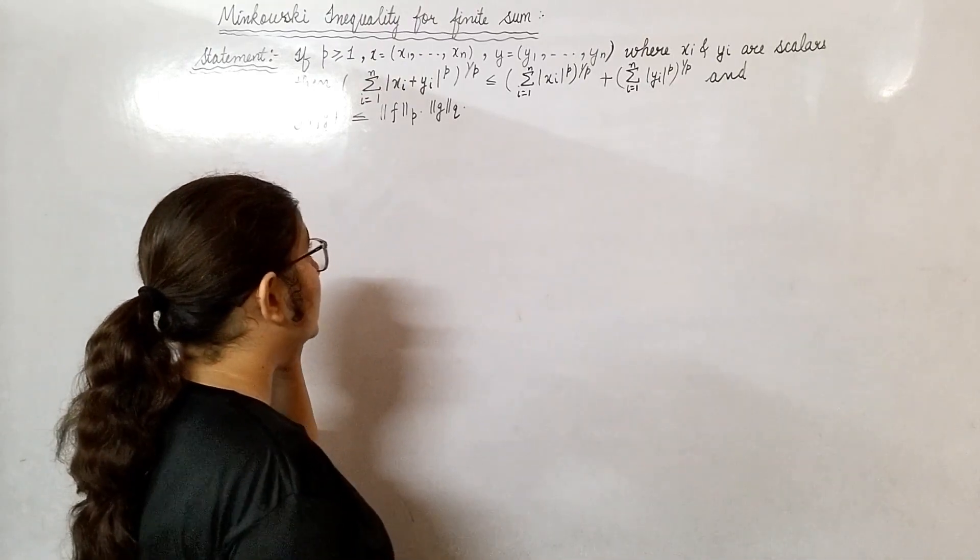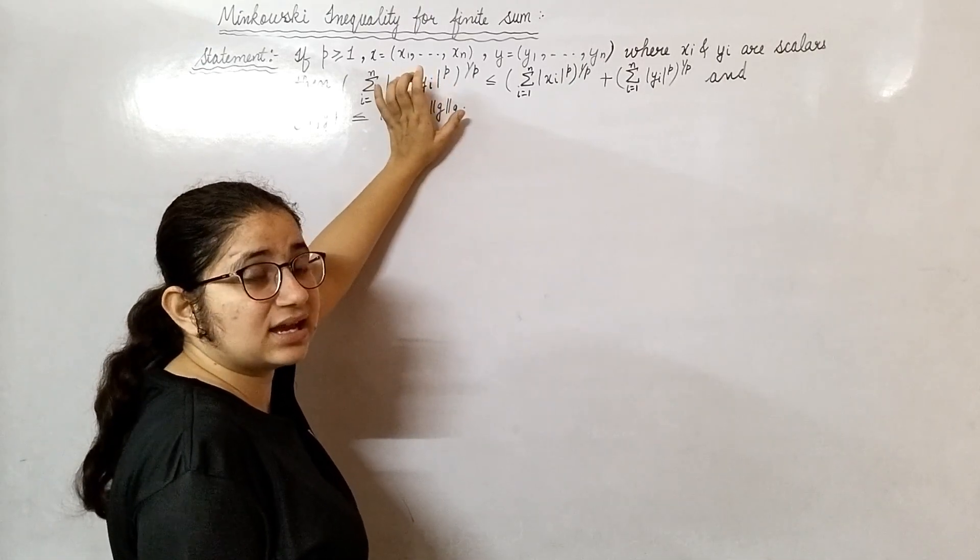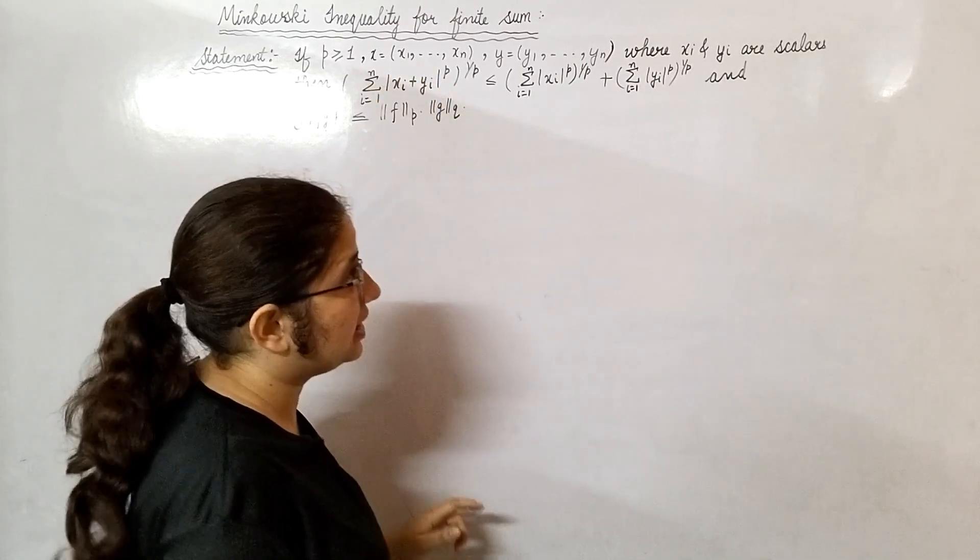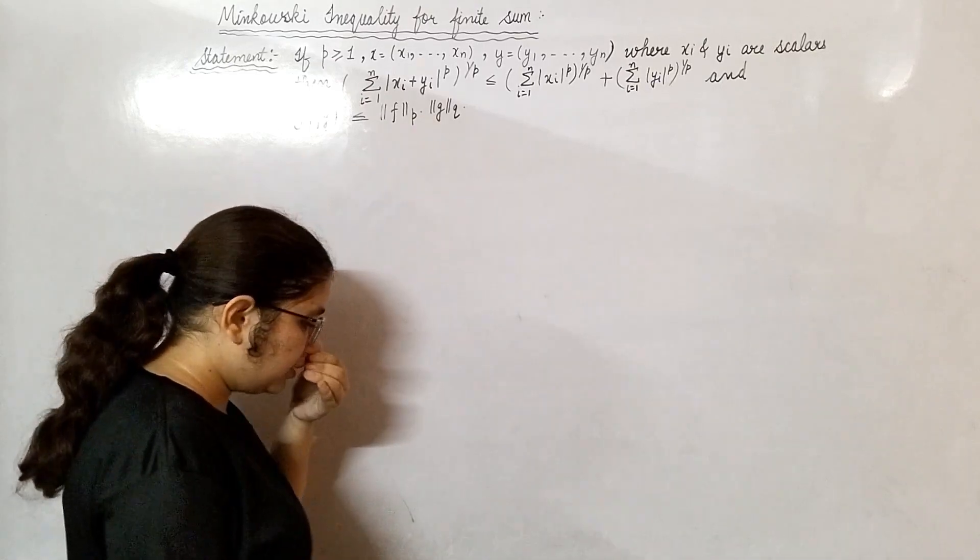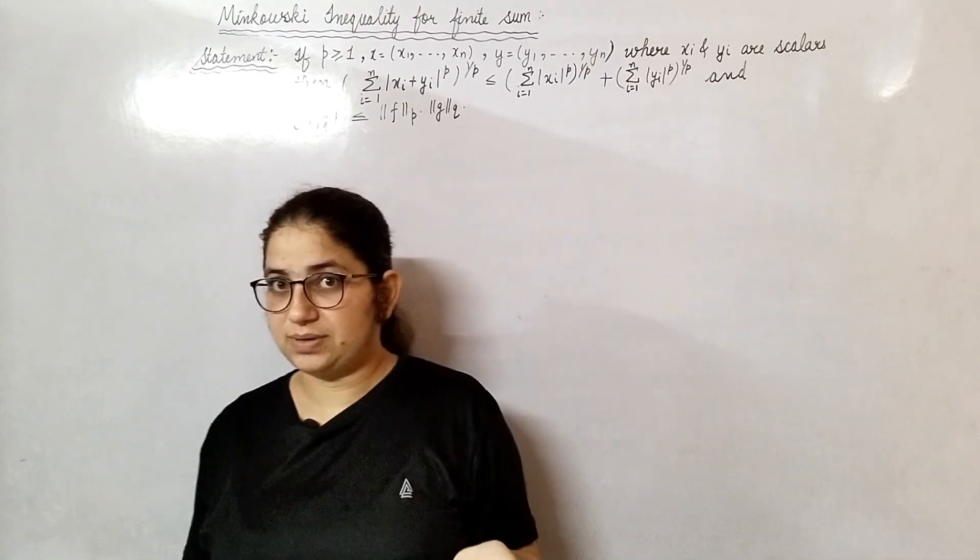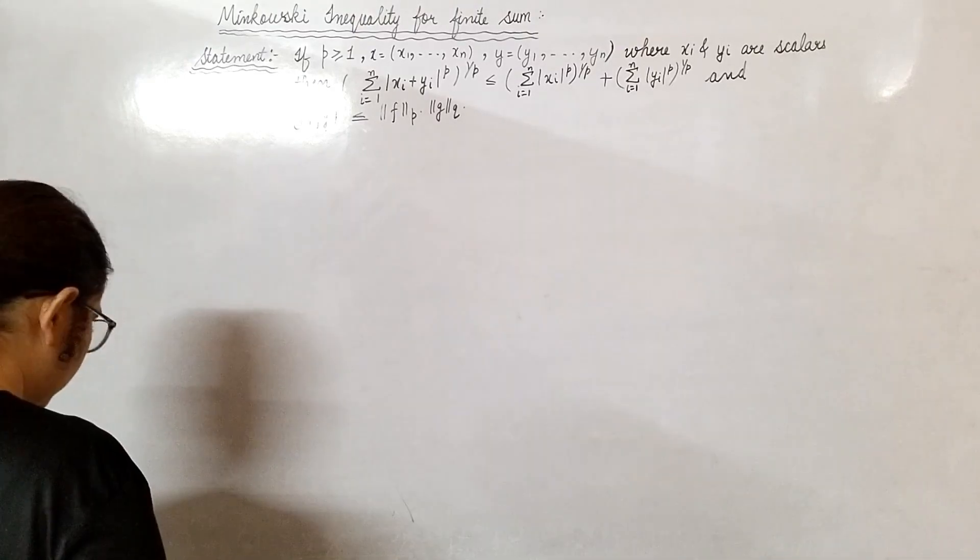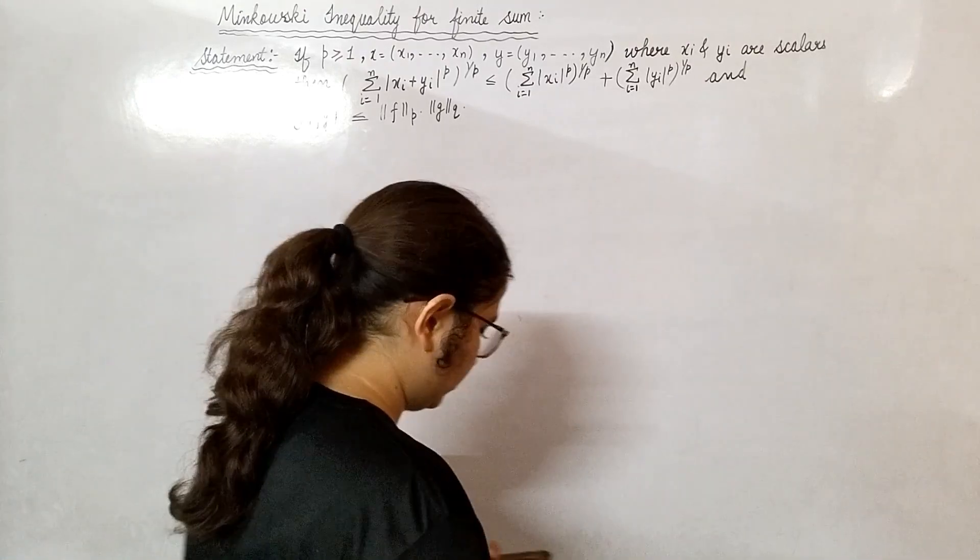If p is greater than or equal to 1, and for finite sum, that's why we have x_i and y_i n-tuples, then you have to show this. When we are doing Minkowski inequality, we are doing for LP^n space. So let's start Minkowski inequality proof.